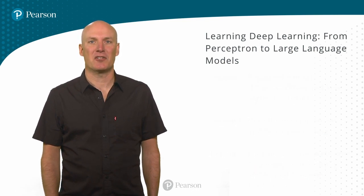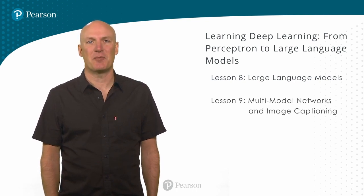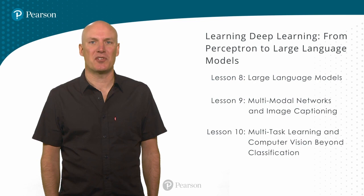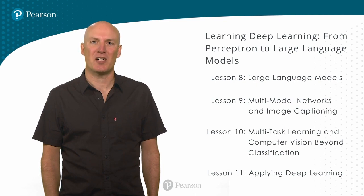You will learn how to build a machine translation application that can translate a sentence from French to English. The next three lessons contain some more advanced applications. Lesson eight is about large language models that got popularized with the release of ChatGPT. Lesson nine is about multimodal models that can mix different types of data, for example, text and images. You will learn how to build a model that takes an image as an input and produces a textual description of the image. Lesson 10 will introduce how to build an application that does multiple tasks simultaneously, and also describes some more advanced computer vision topics. The final lesson discusses some aspects of applying deep learning in practice. In particular, we touch on ethical aspects related to artificial intelligence. Let's get started.